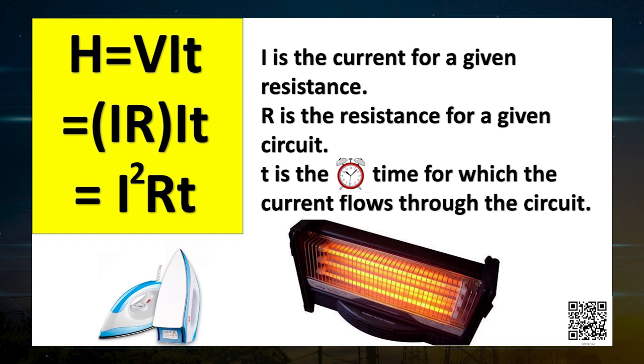This is known as Joule's law of heating. The law implies that heat produced in a resistor is directly proportional to the square of current for a given resistance, directly proportional to the resistance for a given current, and directly proportional to the time for which the current flows through the resistor.